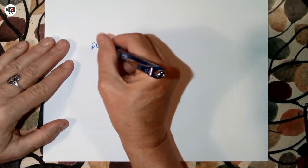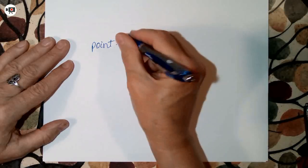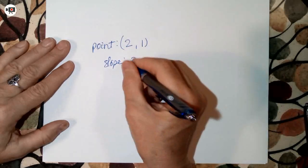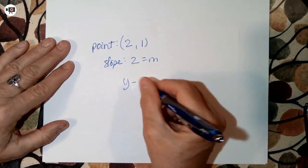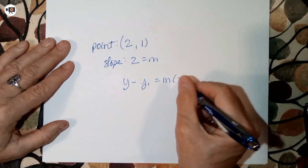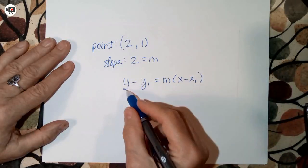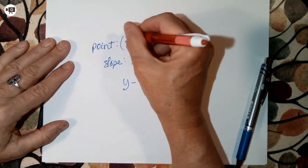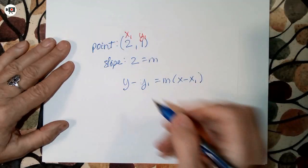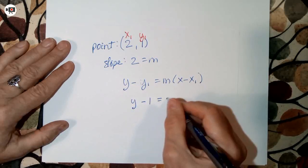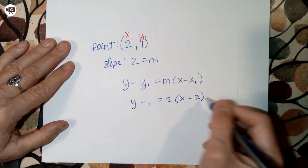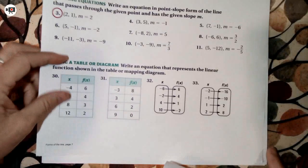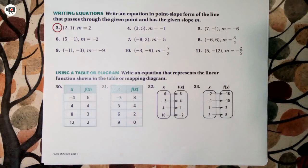Let's do another one. Say we've got a point (2, 1) and a slope of 2. How are we going to do that? One more time: y minus y-sub-1 equals the slope times x minus x-sub-1. Plug them in — here's point 1, x-sub-1 is 2 and y-sub-1 is 1. So we'll have y minus 1 equals 2 times x minus 2. Oh my goodness, that was hard. No, it wasn't. Do these in your notes — don't just look at them and say you know how to do it. You need the practice; actually write it down and it'll make it stick.